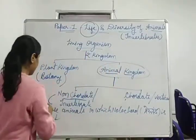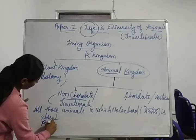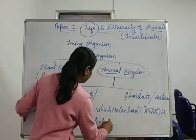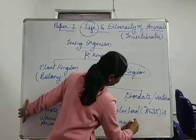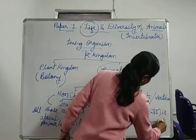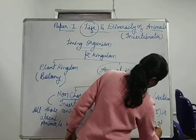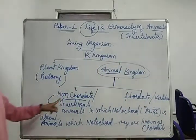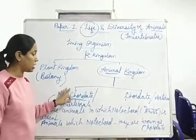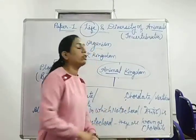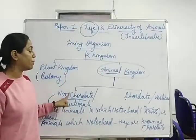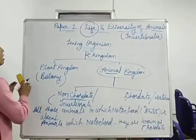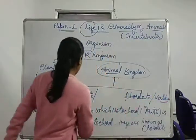While cordate animals are those in which notochord is present — they are known as cordate. So, animals in the animal kingdom in which notochord is found are called cordate. Animals in which notochord is not found are called non-cordate. Another term is vertebrate or invertebrate.